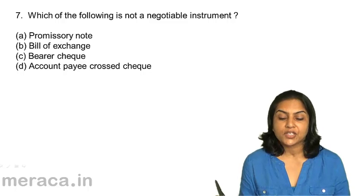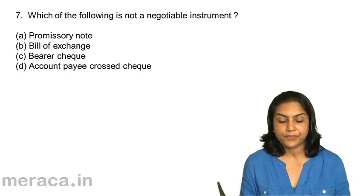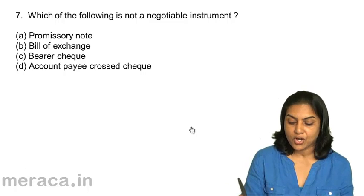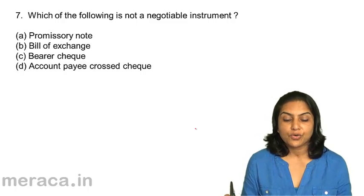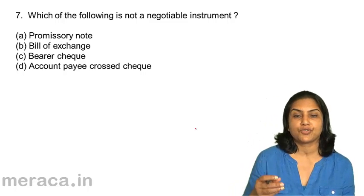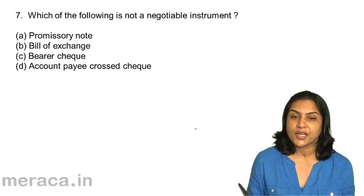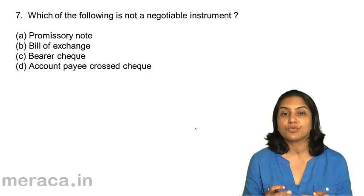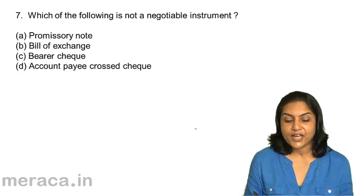Which of the following is not a negotiable instrument? A. A promissory note, B. A bill of exchange, C. A bearer check, D. An account payee crossed check. A promissory note is a negotiable instrument. A bill of exchange is a negotiable instrument. A negotiable instrument means it can be transferred from one person to another. A bearer check is a negotiable instrument because any person who carries the check can collect the cash from the bank.